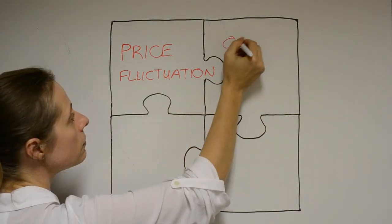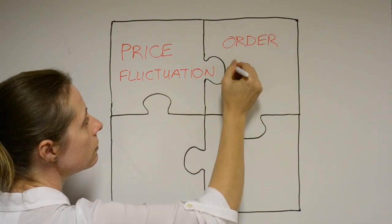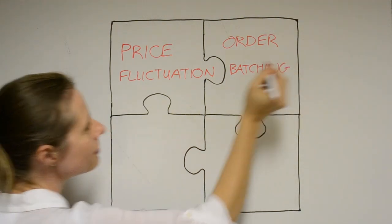Order batching. Companies place orders in batches, often to avoid the cost of processing orders more frequently or to avoid the high transportation costs for less than truckload orders.